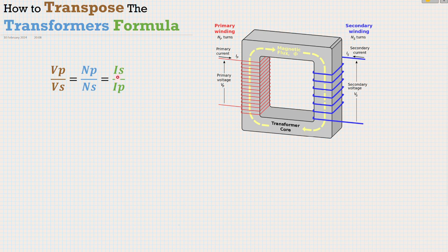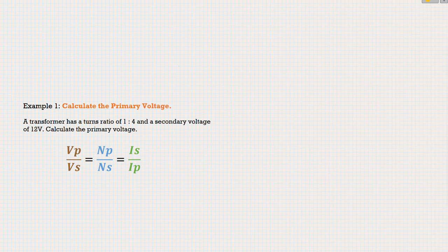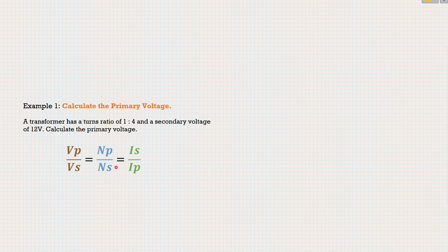Let's look at two examples now. One where we're going to figure out the value on the top of the divisor line, and the second one where we're going to figure out a value on the bottom of the divisor line, and see these two methods of transposing this formula. Here's our first question. We're being asked to calculate the primary voltage. The transformer has a turns ratio of one to four, so we can use one and four as our values for number of turns primary and number of turns secondary.